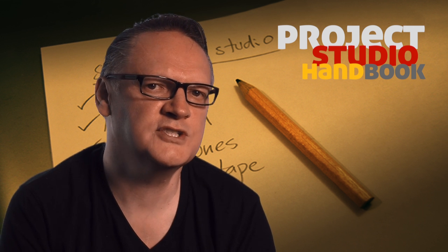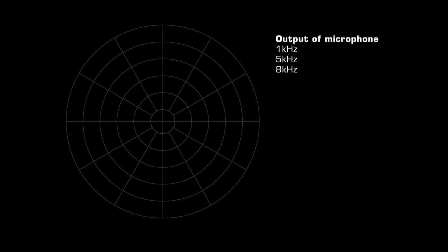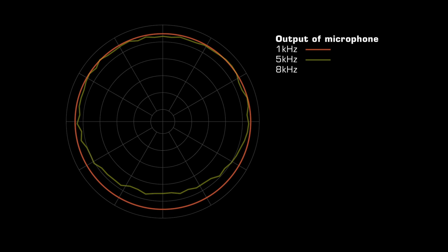Because a microphone's sensitivity can change according to frequency, the diagram may show different plots for different reference tone frequencies. Typically, these will be at a range of frequencies such as 8kHz, 1kHz and 200Hz.